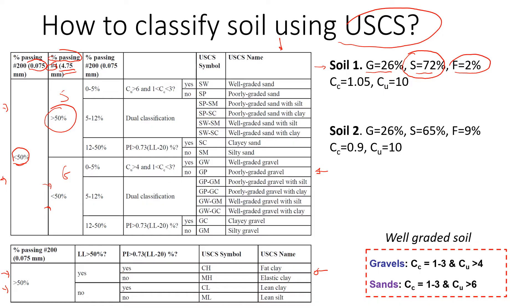More than 50 percent passes the boundary between gravel and sand. Next, percentage passing 0.075 mm gives fines, and we have only 2 percent fines, so we follow that path. We now decide if the soil is well-graded or poorly graded: the coefficient of curvature is 1.05, which is in range, and the coefficient of uniformity is 10, which is greater than 6. Both criteria are met, so the classification for Soil 1 is SW.